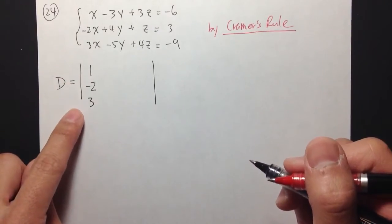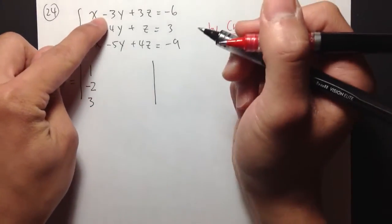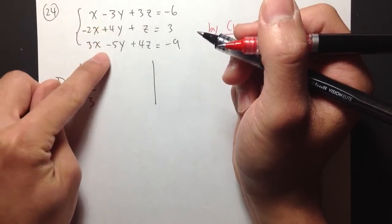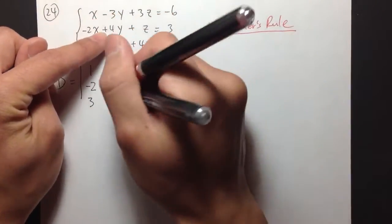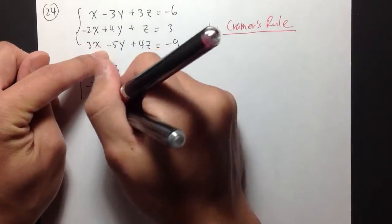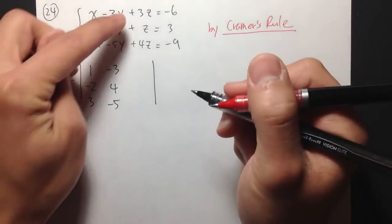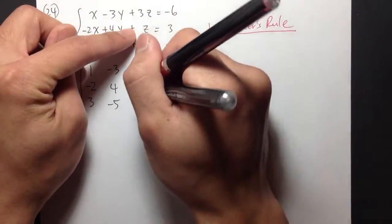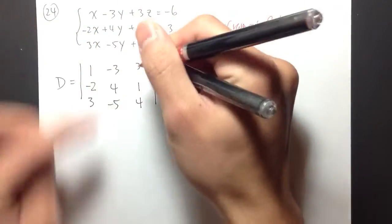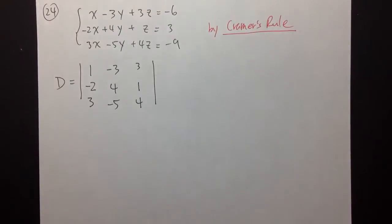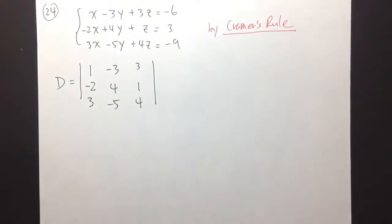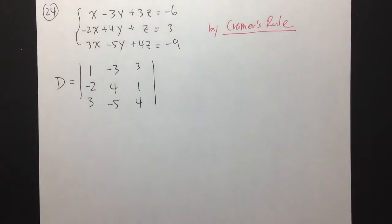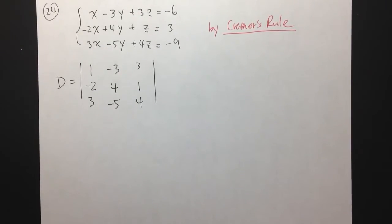So that is my x column. For my second column, I write down the coefficients of the y's: negative 3, positive 4, and negative 5. And then 3, 1, and 4 for the z column. So we have the x column, the y column, and the z column — this is the coefficient matrix from the system of equations.